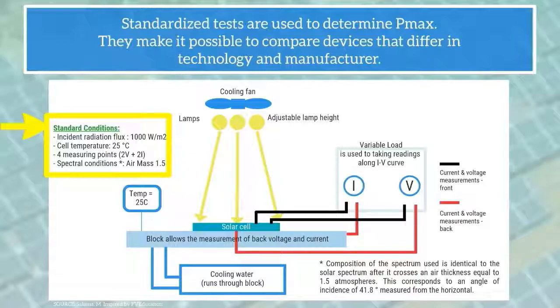Four measuring points are used, two for voltage and two for current. Finally, spectral conditions air mass of 1.5.